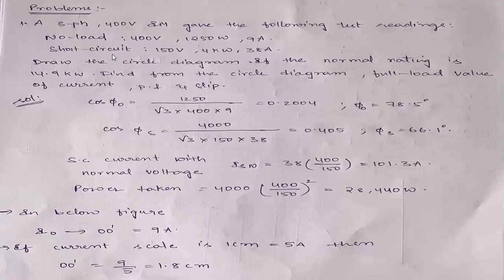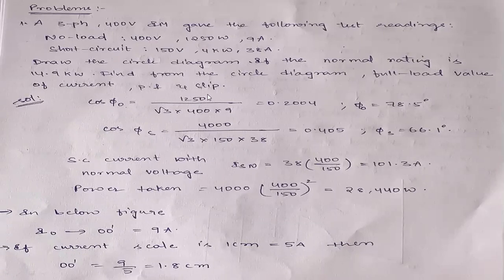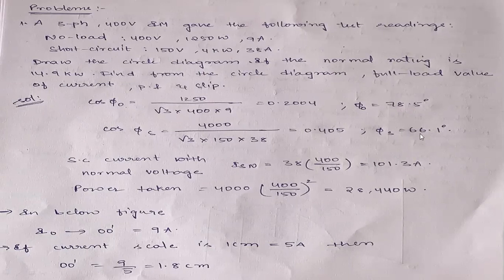Cos phi naught — from the no load test — and phi s from the short circuit test. Cos phi naught is equal to power divided by root 3 into voltage into current: 1250 divided by root 3 into 400 into 9. You are getting phi naught as 78.5 degrees. Next, cos phi s from the short circuit test: power 4k, that means 4 into 10 to the power 3, divided by root 3 into 150 into 38. You will get phi s as 66.1 degrees.